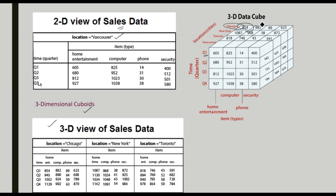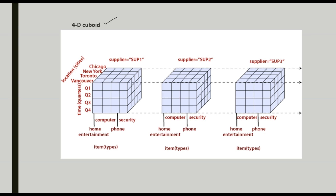When we add more dimensions to the 3D cube, it becomes a 4D cuboid. In a 4D cuboid, we take the same data cube and add one more dimension: supplier — supplier 1, supplier 2, and supplier 3. Imagine looking above and seeing data cubes arranged in a row. With this 4D data cube we can identify four dimensions: location, time, item, and supplier. This is the concept of multi-dimensional view or multi-dimensional model of a data warehouse.